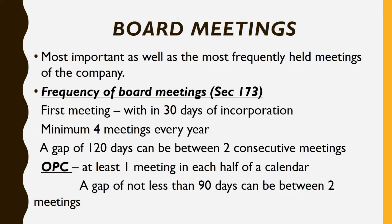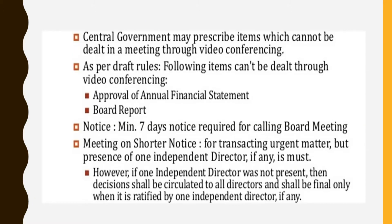In the case of a one person company, at least one meeting should be conducted in each half of a calendar year, and a gap of not less than 90 days can be between two meetings. The directors can conduct a meeting through video conferencing, but sometimes the central government prescribes some items which cannot be dealt with in a meeting through video conferencing or other audio visual media.